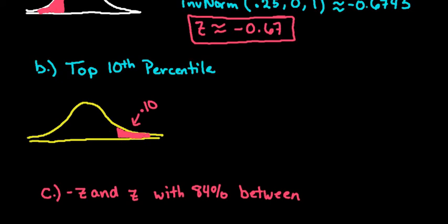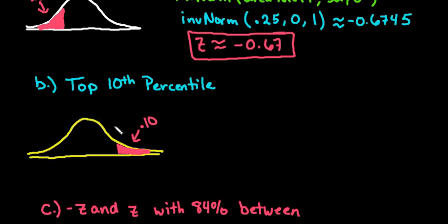And if you recall, I said that in order to plug this into your calculator, you do have to have the area to the left. So to find the area to the left of this, we would just do 1 minus 0.10, which is 0.9. So this would give us our area to the left.